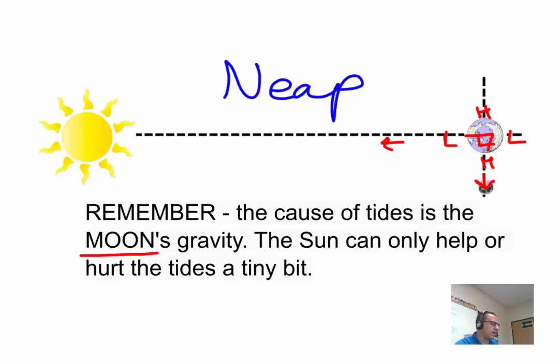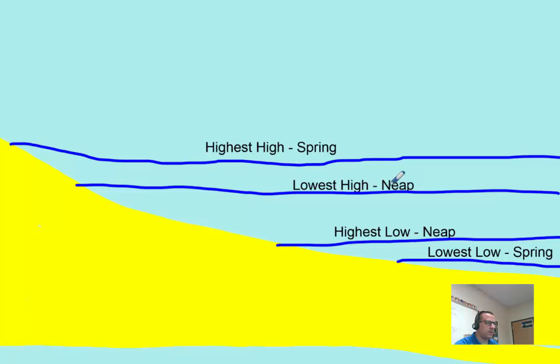You're going to see that you have the lowest high tides and the highest low tides. So you can see it has the smallest range of how much it goes up and down. Here, during the spring tides, you have the largest range of how much it goes up and down.